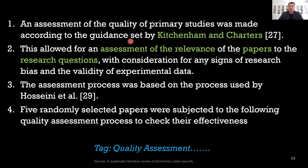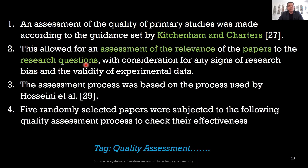Here is an example from a paper on a systematic literature review on blockchain cybersecurity. An assessment of the quality of primary studies was made according to the guidance by Kitchenham and Charters. This allowed for an assessment of the relevance of papers to the research question — this connection must be shown very clearly that the paper is included because it relates to and helps answer the question.